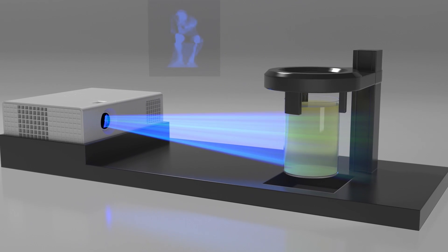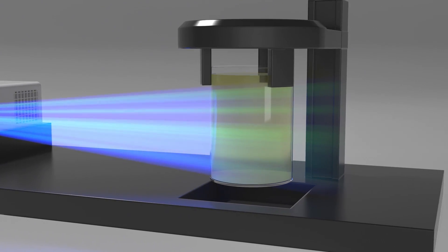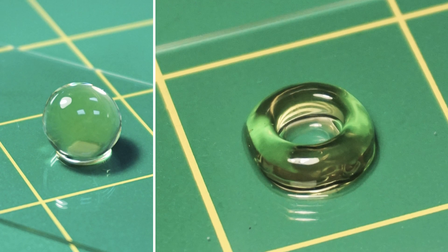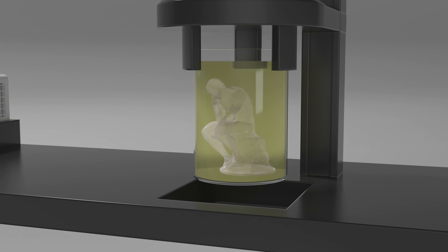As the container rotates, photons entering from different angles meet at select spots in the gel. Where they meet, their combined energy solidifies the gel. Where photons don't combine with enough energy, they pass on through without altering the material.